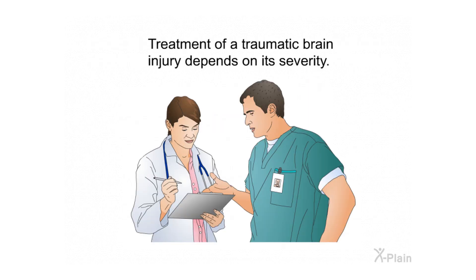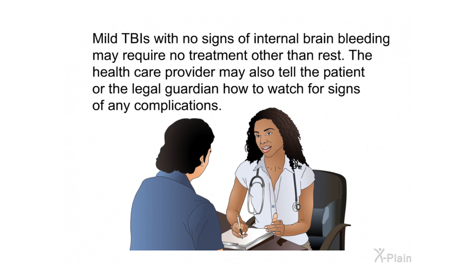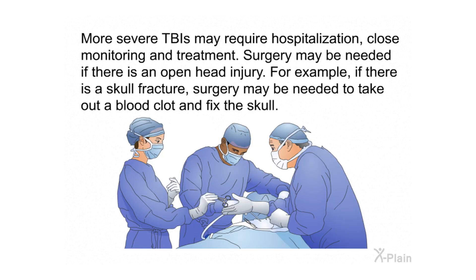Treatment. Treatment of a traumatic brain injury depends on its severity. Mild TBIs with no signs of internal brain bleeding may require no treatment other than rest. The healthcare provider may also tell the patient or legal guardian how to watch for signs of any complications. More severe TBIs may require hospitalization, close monitoring, and treatment. Surgery may be needed if there is an open head injury — for example, if there is a skull fracture, surgery may be needed to remove a blood clot and fix the skull.